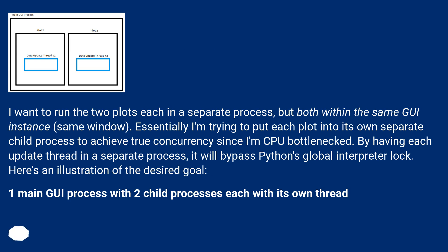I want to run the two plots each in a separate process, but both within the same GUI instance, same window. Essentially, I'm trying to put each plot into its own separate child process to achieve true concurrency, since I'm CPU bottlenecked. By having each update thread in a separate process, it will bypass Python's global interpreter lock. Here's an illustration of the desired goal: one main GUI process with two child processes, each with its own thread.